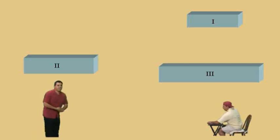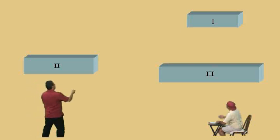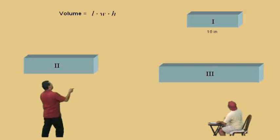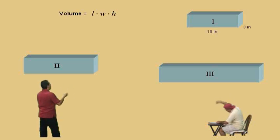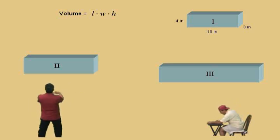Okay, Charlie, what is the dimensions for rectangular solid number one? Charlie, what's the length? Ten. Okay, and the width? Three. And the height? Four. Very good. Okay, Charlie, keep it going, here we go. Rectangular solid two.